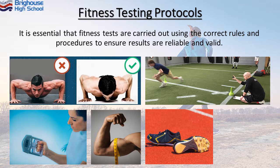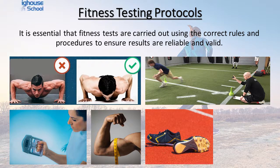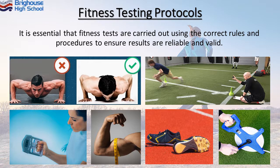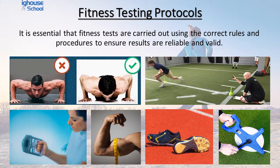We also need to take into account the environment the tests are being carried out in and the equipment athletes are using. If you're doing the 30 metre sprint test or the 12 minute Cooper run, is this on a track or on grass? Are people wearing spikes, trainers, or boots? Because each of these different factors can influence the results. We also need to make sure that people setting up the tests have measured the correct distances — are people using a 400 metre running track for the Cooper run? When setting out the Illinois Agility run, are all the cones placed the correct distance apart? All these things need to be accounted for.